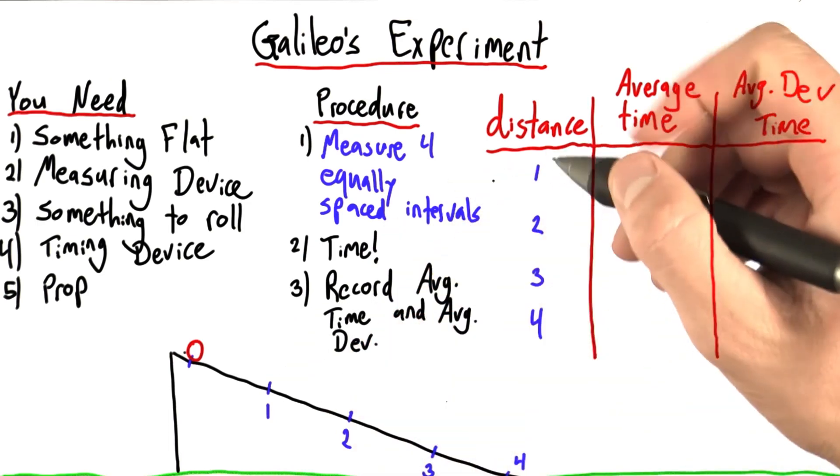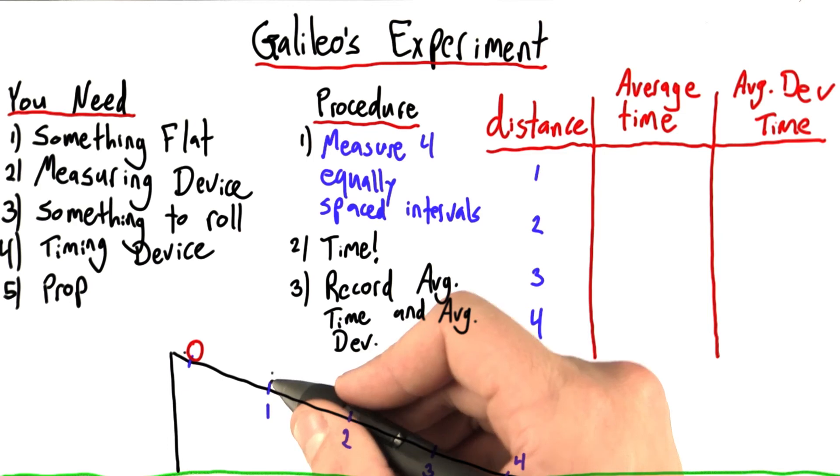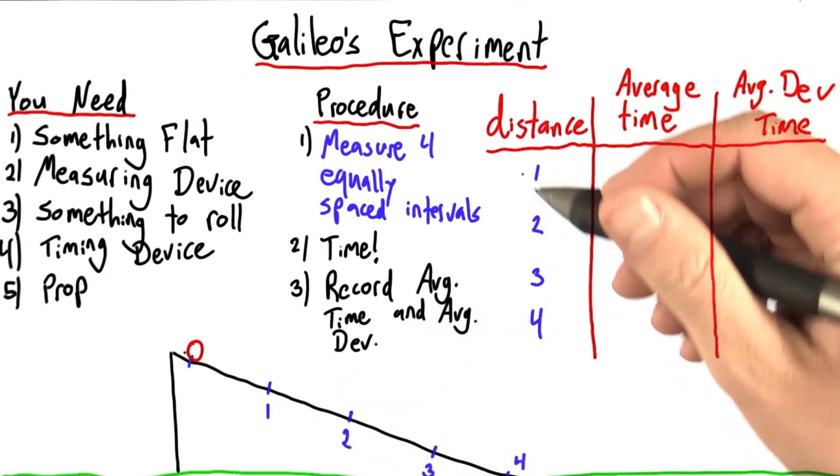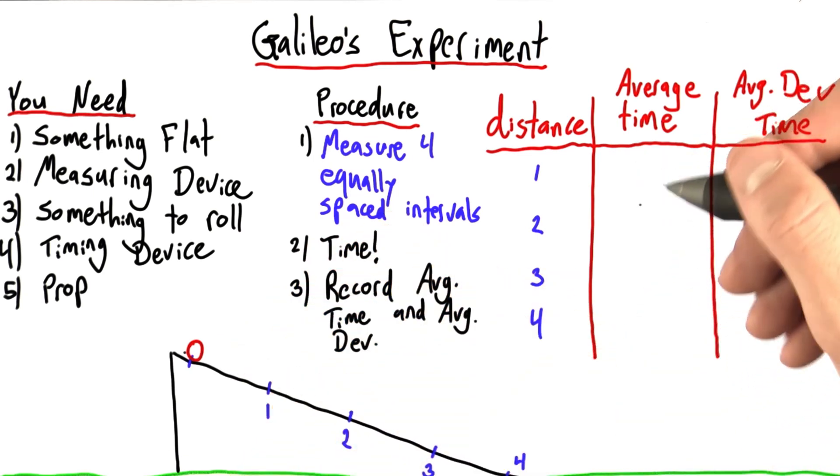Note one thing. This experiment is done slightly differently than Galileo did it. We're not letting the ball roll for a fixed period of time and then measuring the distance. We're letting the ball roll for a fixed distance, up to one or up to two, and then measuring the time. But this is an equally good way to do this experiment.